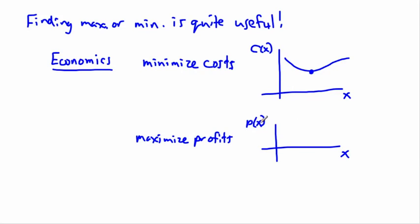Or maybe you have a profit function — profit as a function of x. You want to find the value that maximizes your profits, because producing beyond that point might actually decrease profits due to higher costs. Profit is about income minus costs — how much money comes in compared to how much goes out — and you want that to be maximum.